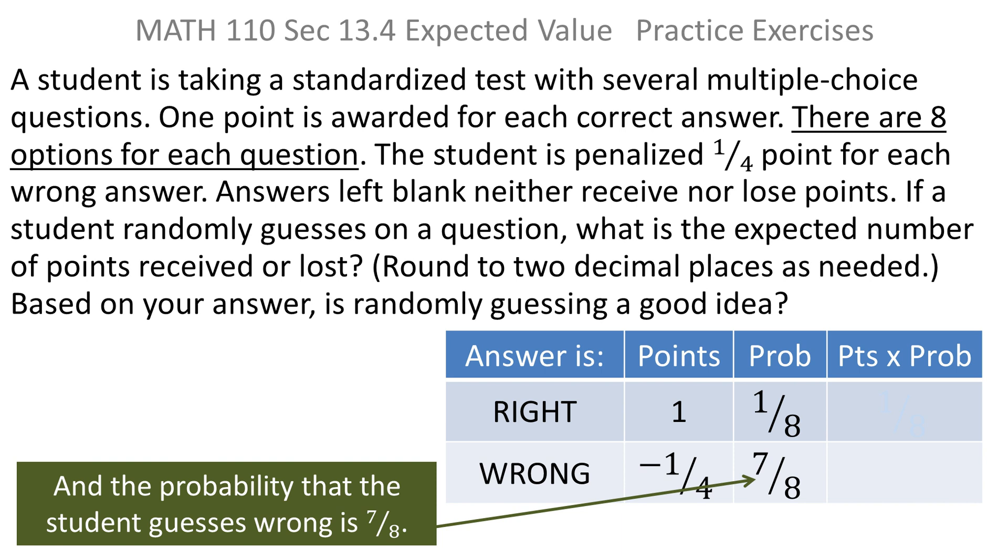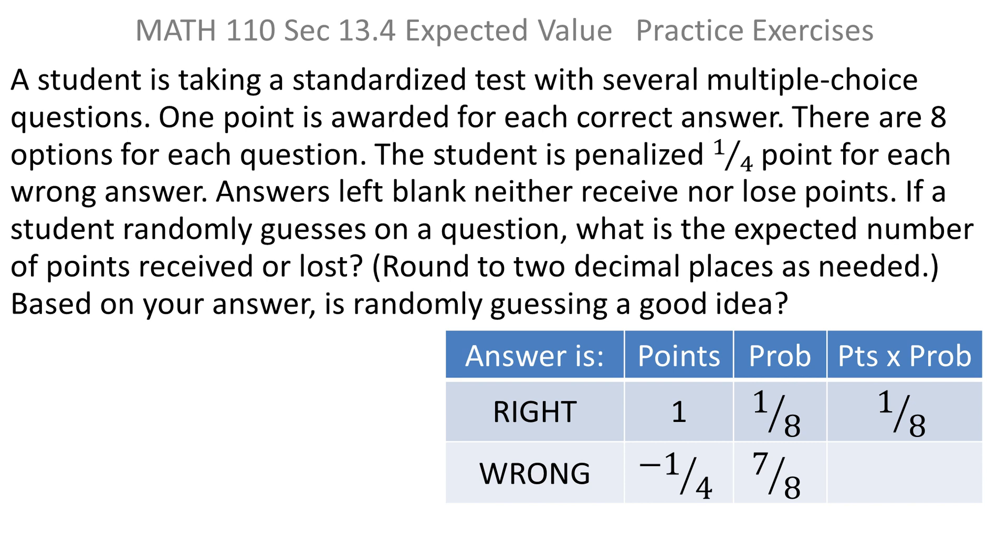And of course, once you've got this far into the table, you're home free, because to find the expected value, you take the points times the probability of those points and multiply. So you take one times one-eighth, which is one-eighth.